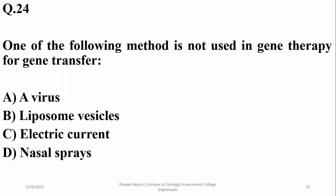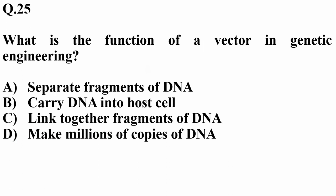Which of the following methods is not used in gene therapy for gene transfer? Gene transfer during gene therapy can be assisted with the help of a virus, liposome vesicles, or nasal sprays — but electric current is not used. A vector in genetic engineering carries the desired DNA into the host cell for expression, beta.